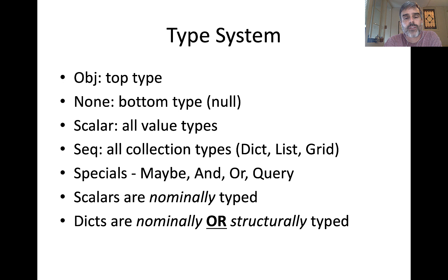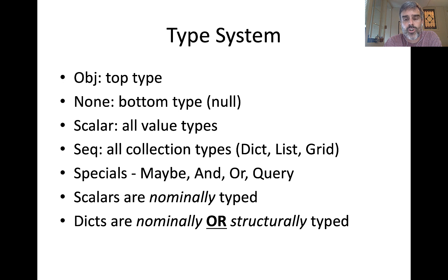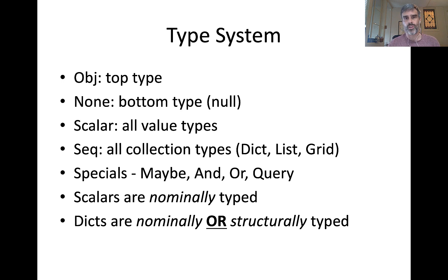There are a couple of special types. The maybe type is an optional type. And/or is a mechanism to create compound types from existing types. The query type we're going to look at in the videos. Scalars are nominally typed, which means I'm only, for example, a date if I explicitly say I'm a date. Whereas when we're actually validating Haystack data, we're going to use a structural type system that we call fitting a type to particular dictionaries. We'll look a lot more at that in the later videos, but just introducing the concept here.